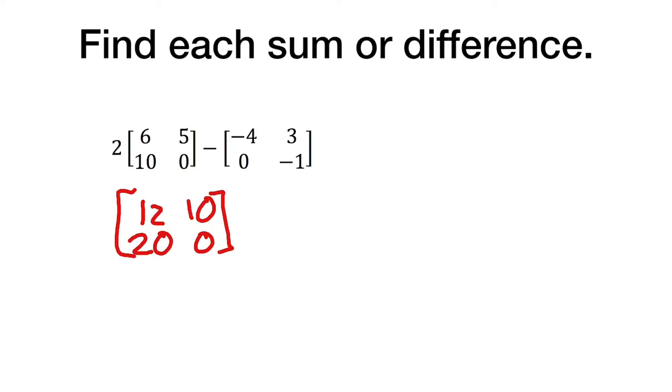And now we will be still subtracting it by negative 4, 3, 0, negative 1. So 12 minus negative 4 actually becomes positive 16, because remember when you subtract a negative it becomes positive. 10 minus 3 is 7, 20 minus 0 is 20, and 0 minus negative 1 becomes positive 1.